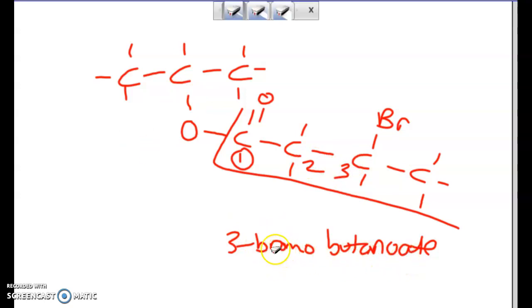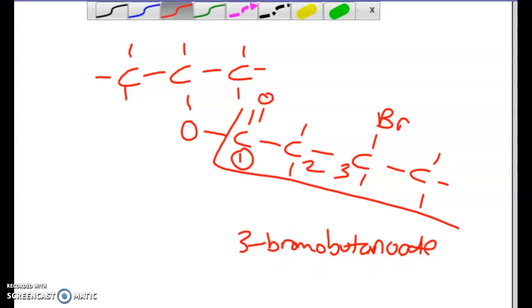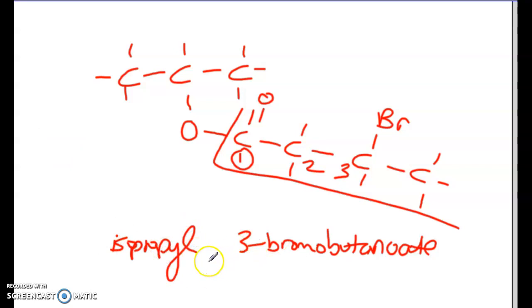There should not be a space there. Okay, so anything written on the right-hand side of the space is everything that is part of the parent structure, like the parent portion. In front of the space, we would write what is on the other side. So in this case, we have isopropyl. So it's isopropyl space three-bromo-pentanoate.